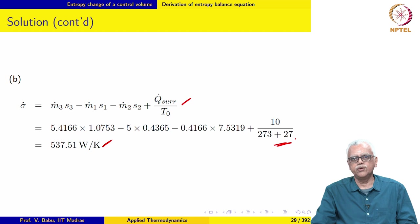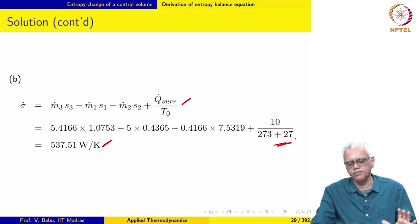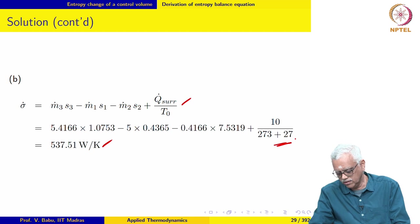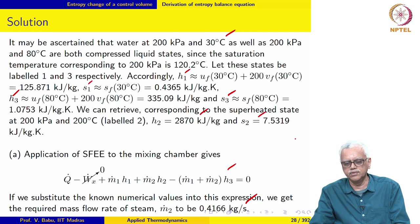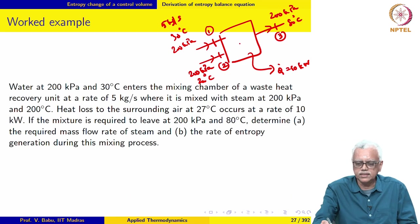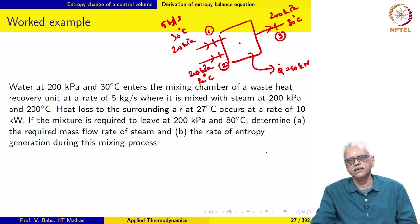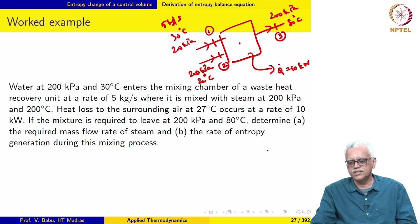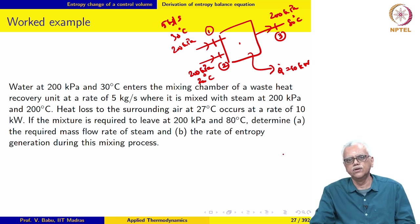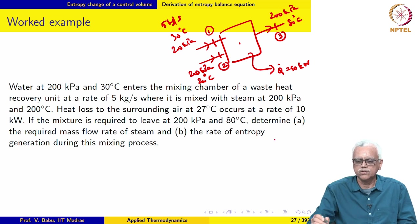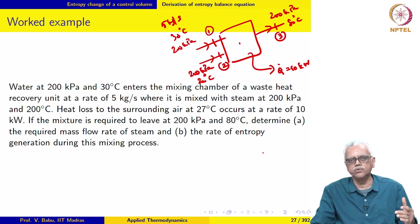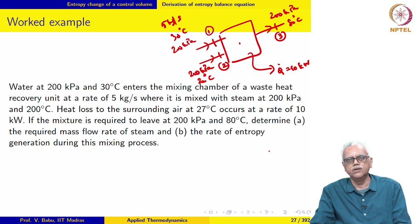This is the rate at which entropy is generated in the universe as a result of the mixing process. There are two irreversibilities: the internal irreversibility associated with mixing, and the external irreversibility due to heat transfer across a finite temperature difference. The two together contribute to an increase in the entropy of the universe.